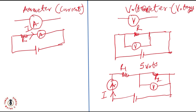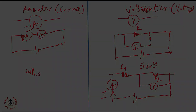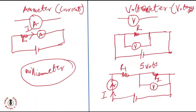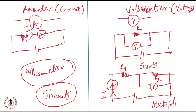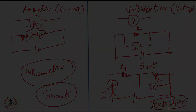The basic equipment functioning inside these ammeters and voltmeters are always milliammeters. If I need to use them to measure higher current, then as an ammeter I need to introduce what we call a shunt. And if I want to use it to measure high voltages, I need to introduce what is called a multiplier. Shunts help measure high currents when dealing with an ammeter, and multipliers help use a small milliammeter to measure high voltages when dealing with a voltmeter.